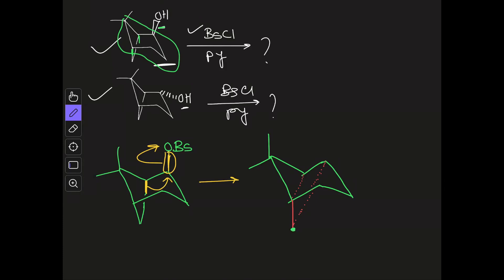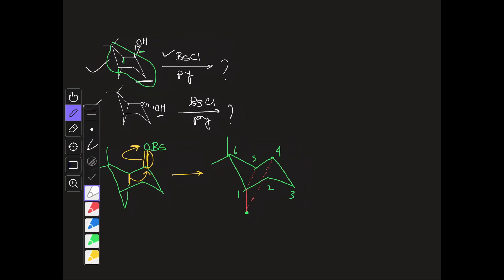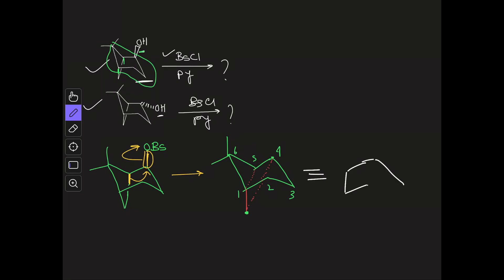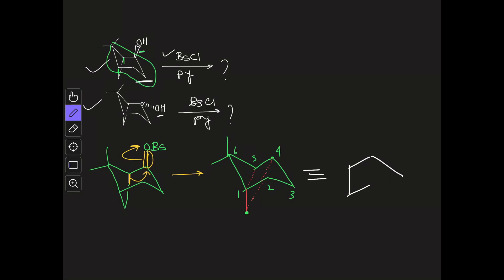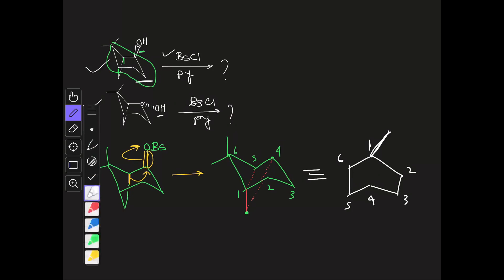This center is now bonding to both this one and this one. Let me give numbers: this is 1, 2, 3, 4, 5, 6 — all six carbons marked. If I rotate the structure, the same structure can be represented differently. Carbon 5 and carbon 4 are both bonded to the bridging carbon, so using a different color, we can show that carbon has bonds with both positions 4 and 5.